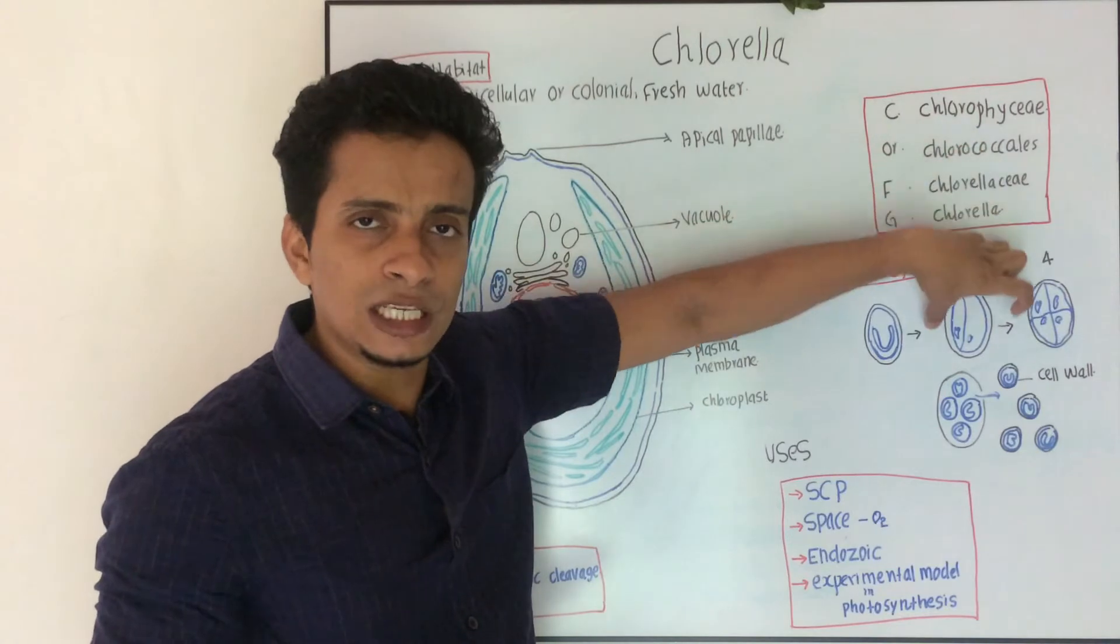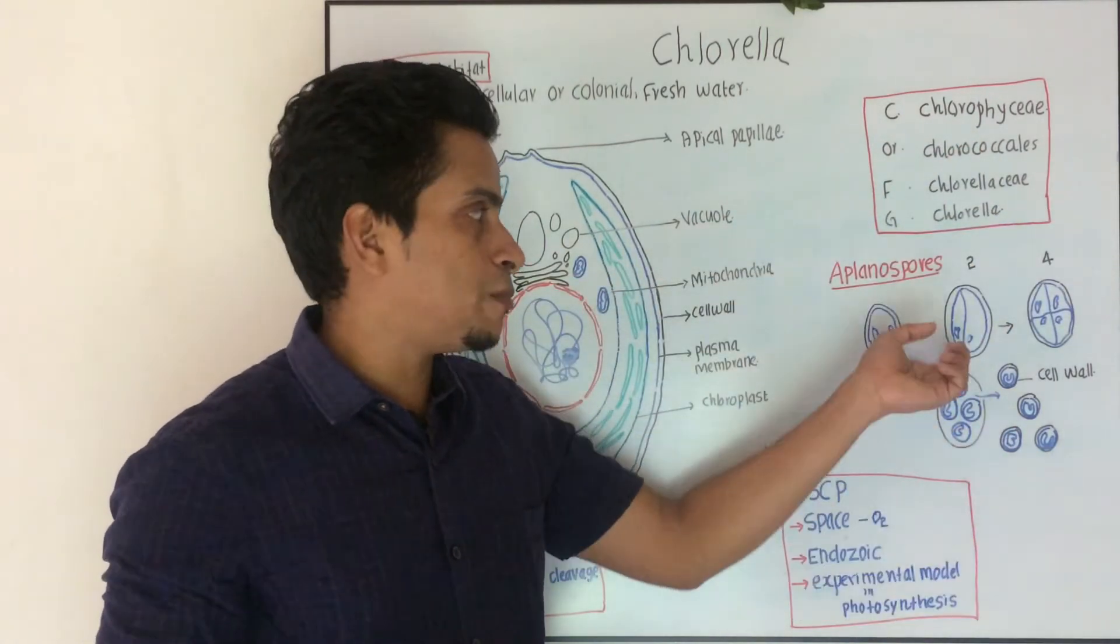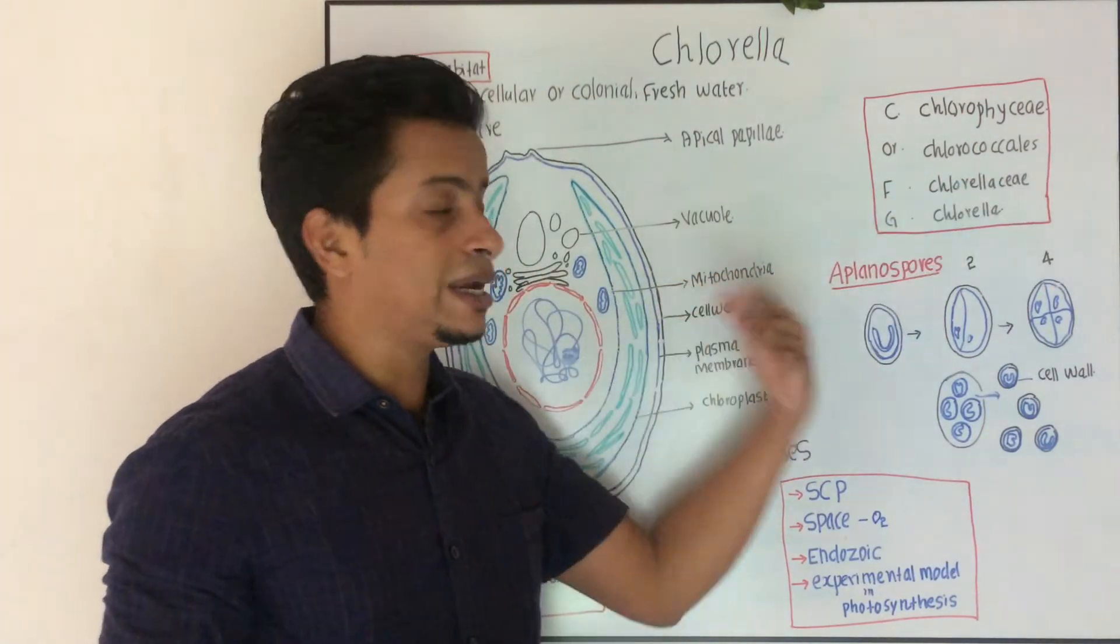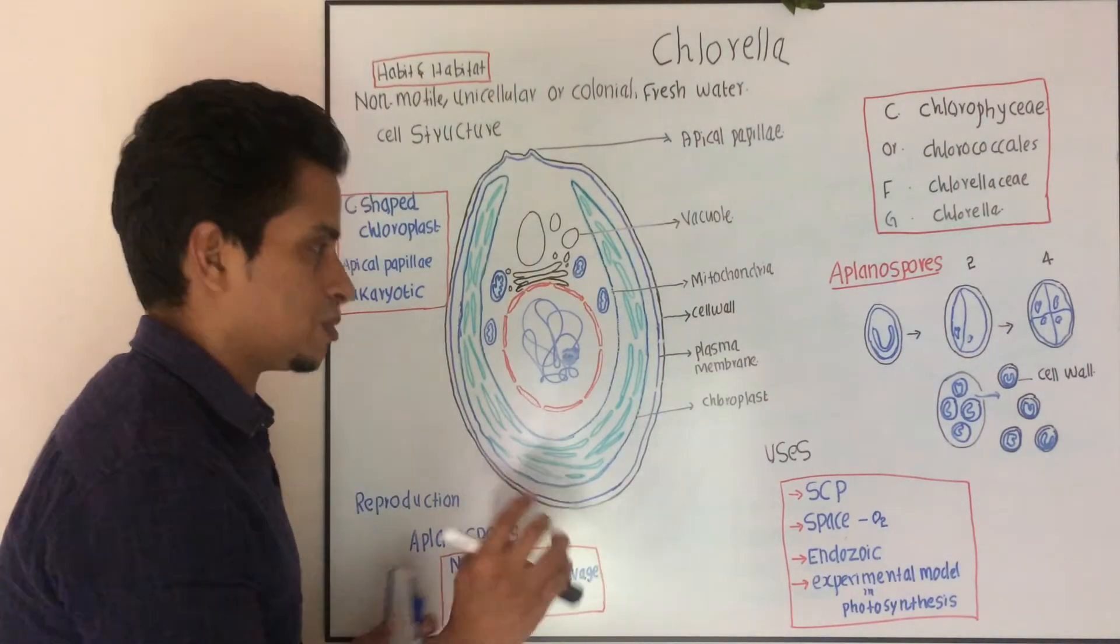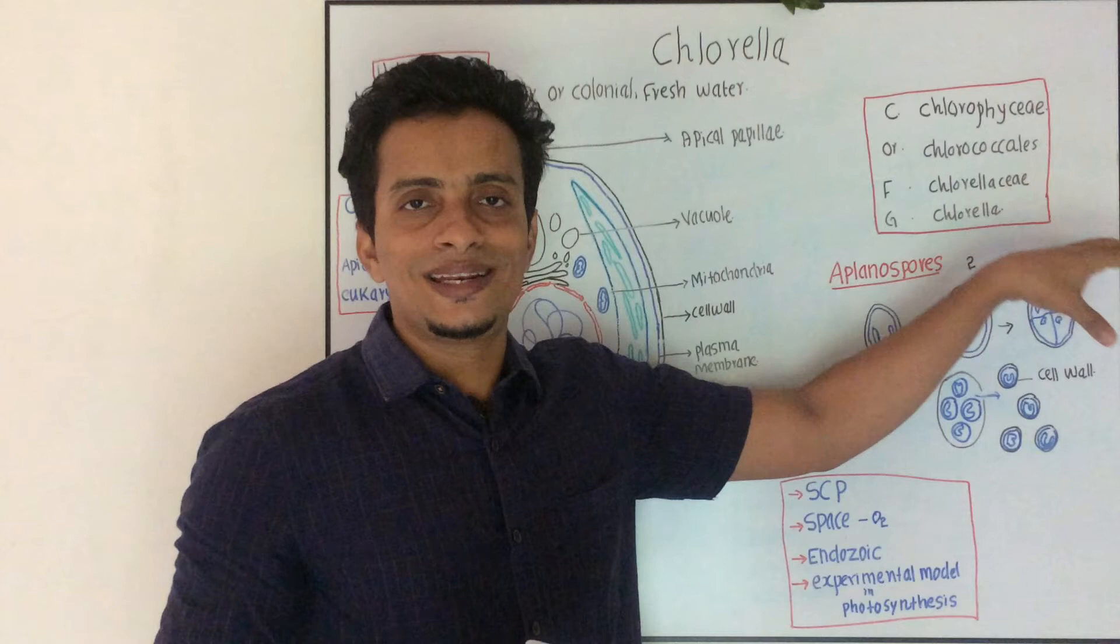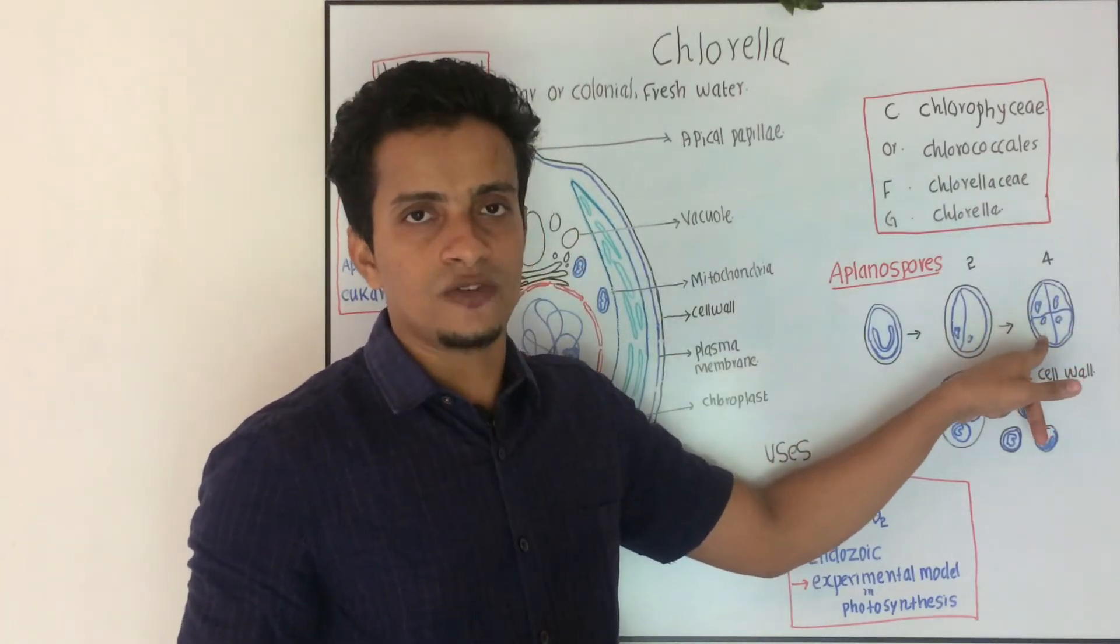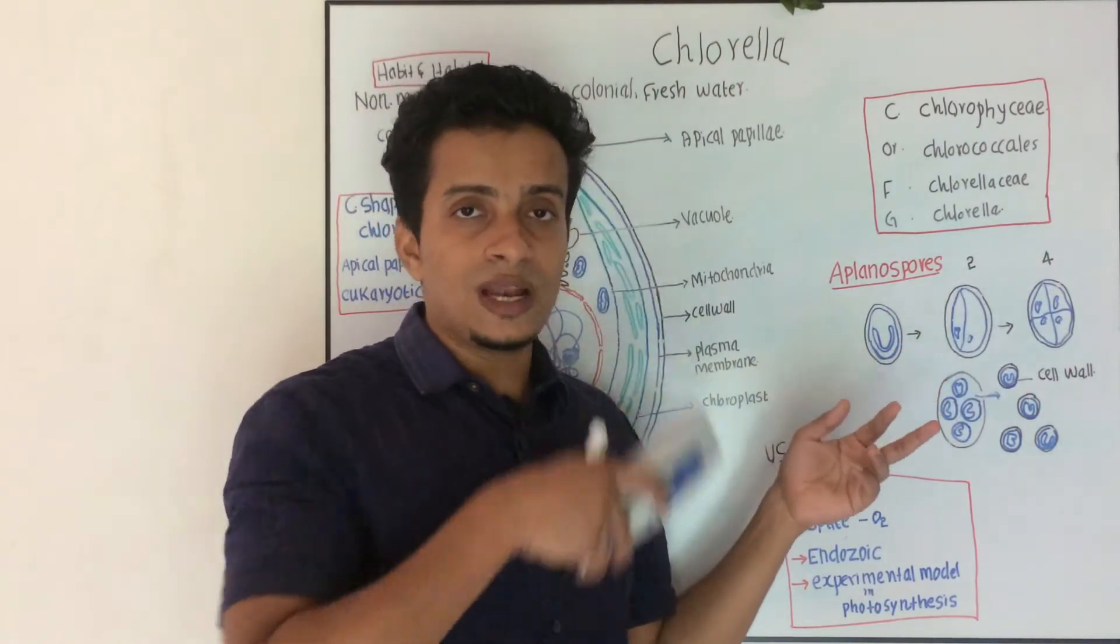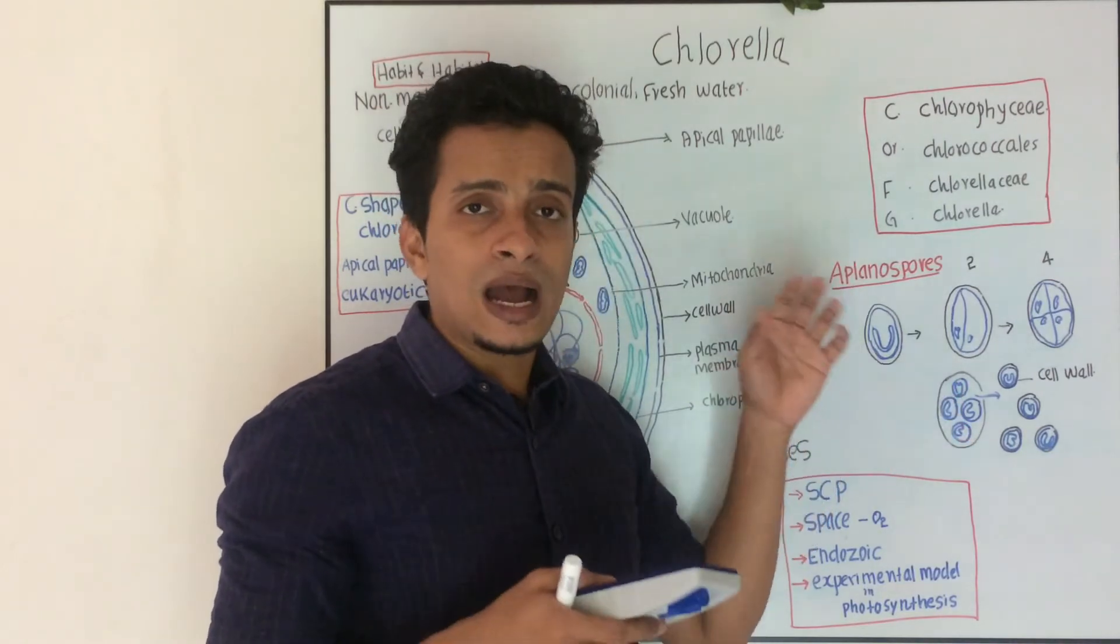Next, two celled. So, this two celled directly aplanospore can germinate. Or it can divide into 4, 8, or 8, 16. Then, I will represent one celled. Then, the cleavage, this body, they will get round-off, they will round-off.